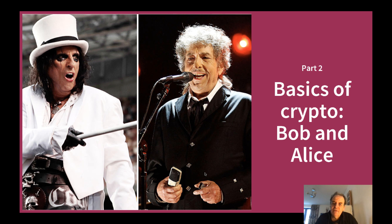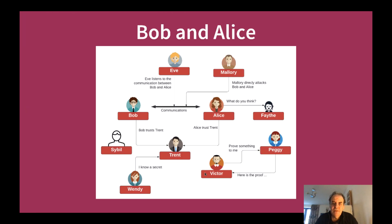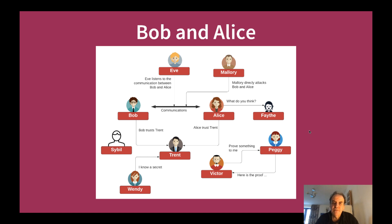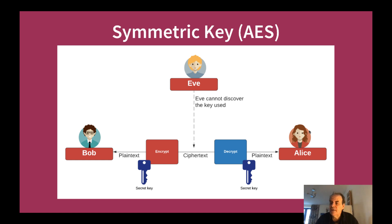Let's look at some of the basics of cryptography, and part of that is the concept of Bob and Alice. Bob and Alice were created in a paper by Rivest, Shamir, and Adleman, who developed the RSA method. They defined that Alice will talk to Bob. Bruce Schneier then developed these into a whole set of different roles such as Trent the trusted entity, Eve who listens to the communications, Mallory who attacks Bob and Alice, Peggy who proves something, and Victor who will verify things.